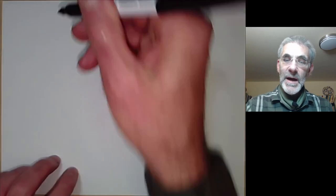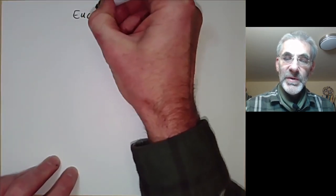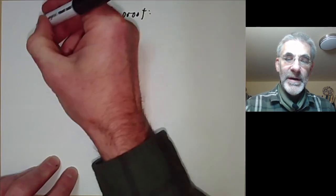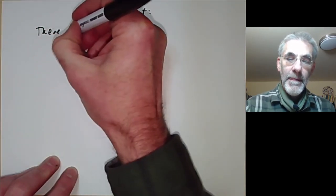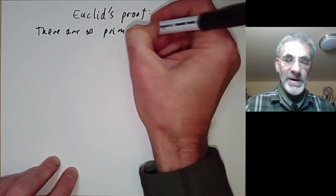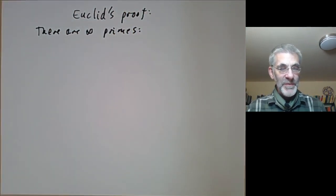This lecture is part of an online course on the theory of numbers and will be about Euclid's proof. This is Euclid's proof that there are infinitely many primes. Most people already know this proof, I'll just review it quickly.